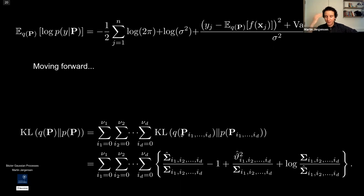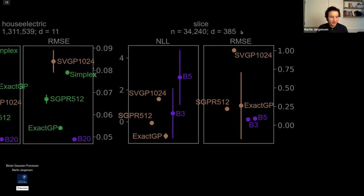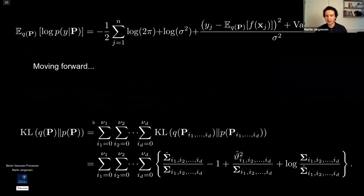I don't believe all 385 dimensions are important. For some dimensions the correct order might be zero — just a constant along that dimension — allowing us to find out which dimensions actually matter. Assuming independence also inflates the KL term; the KL would probably be smaller if control points were not assumed independent. Q: Is using the ELBO to determine ν dangerous? With SVGP, using the ELBO to choose the number of inducing points is not advised. A: It's slightly different here because ν determines how quickly your function can vary — more like tuning the kernel than the model capacity.